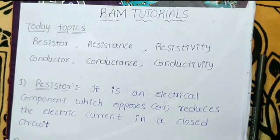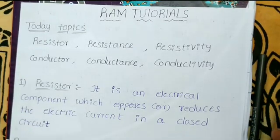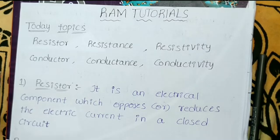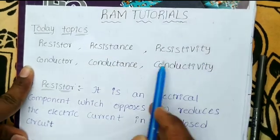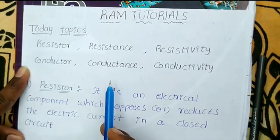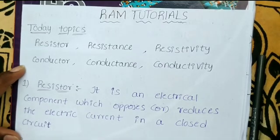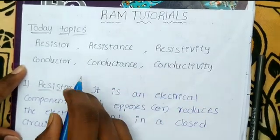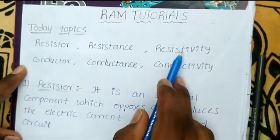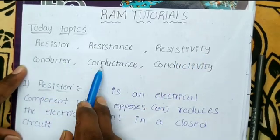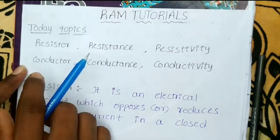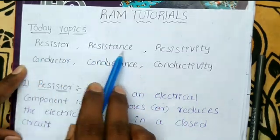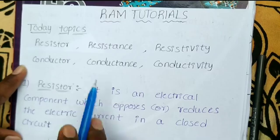Hello friends, welcome back to Run2Tales. Friends, here are my six topics to discuss. The topics are Resistor, Resistance, Resistivity, Conductor, Conductance, and Conductivity. You may be very confused about these six topics. In this video, I will show you the most important differences.